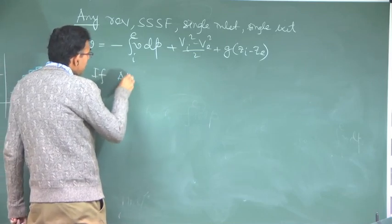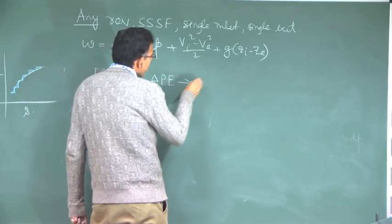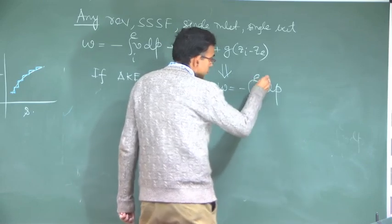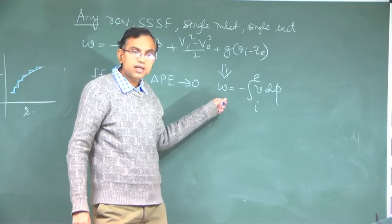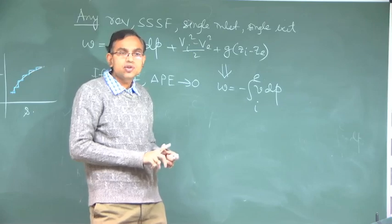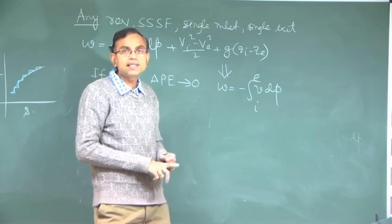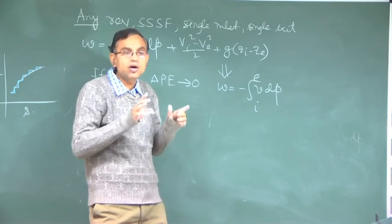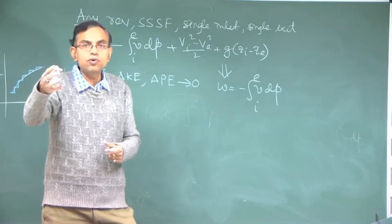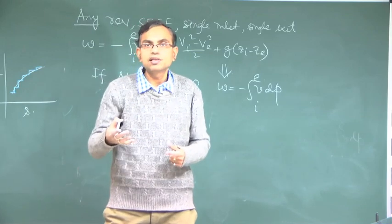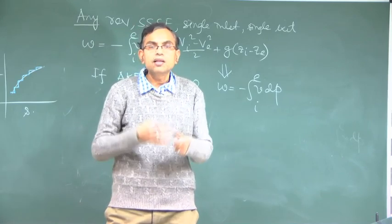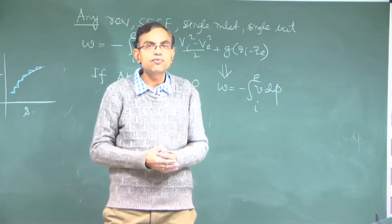If kinetic energy and potential energy changes are negligible, the work done reduces to minus integral of V dp. Note that the formula for work done is no longer P dv but minus V dp. The reason is that here the work is not due to movement of the system boundary, but is primarily associated with flow energy or flow work — the work done to maintain the flow in the presence of pressure — which has nothing to do with moving-boundary type work. This is work done for a control volume process, and you must use minus V dp, not P dv. Students very commonly make mistakes here.